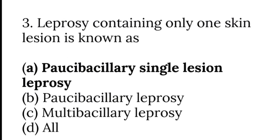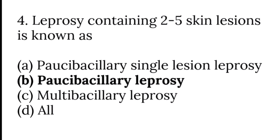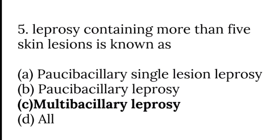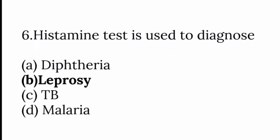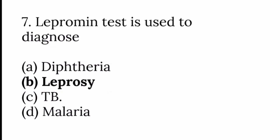Leprosy containing only one skin lesion is known as paucibacillary single lesion leprosy. Leprosy containing 2 to 5 skin lesions is known as paucibacillary leprosy. Leprosy containing more than 5 lesions is known as multibacillary leprosy. The histamine test and lepromine test are used to diagnose leprosy.